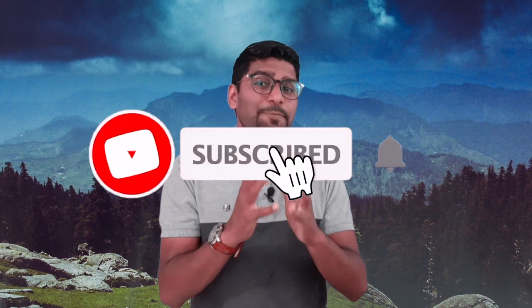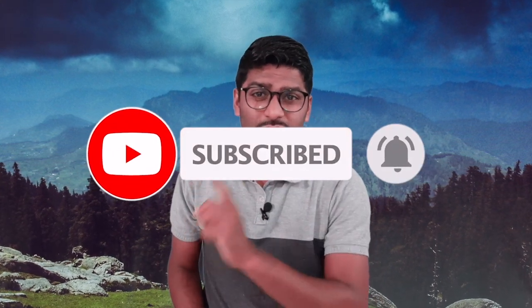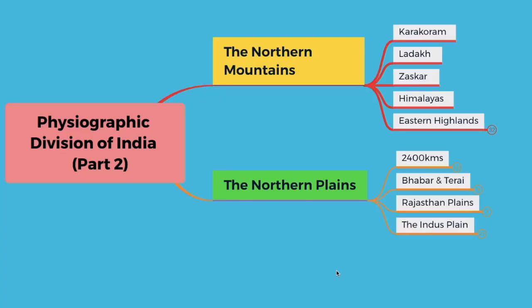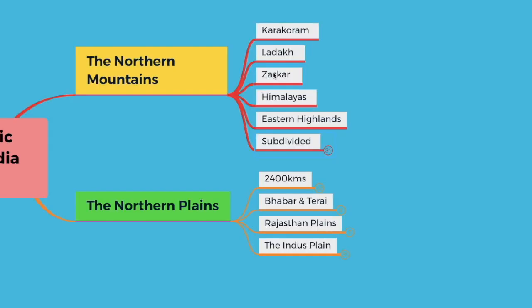If you have not subscribed to this channel, do that and don't forget to hit the bell icon so every time I post a new video you get it first. Let's get into this class. Let's begin with the Northern Mountains. The northern mountain region is formed by mountain ranges of Karakoram, Ladakh, Zaskar, Himalayas, and the Eastern Highlands.